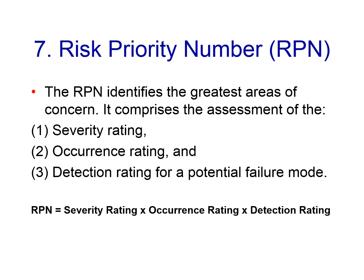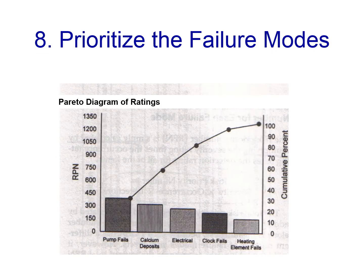The seventh step is to calculate the risk priority number (RPN) for each effect by multiplying the three factors together: severity, occurrence, and detection. This gives an overall RPN between 1 and 1000 for each failure mode. We then use this RPN number to sort and rank the different failure modes to prioritize the need for corrective action. A Pareto diagram is used to prioritize failure modes — for example, the highest RPN might be 'pump fails,' the next highest 'calcium deposit,' and so on. We focus on the higher RPNs to reduce their value.